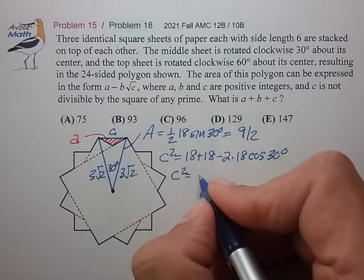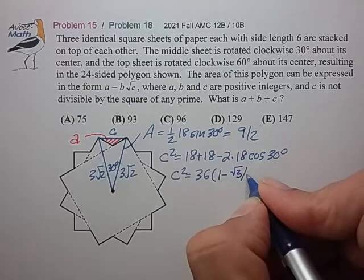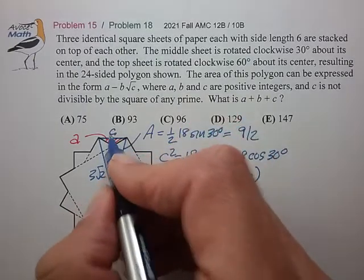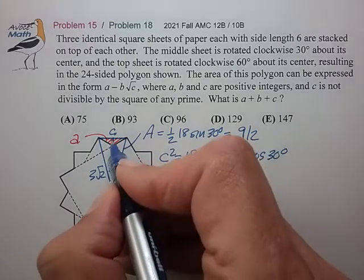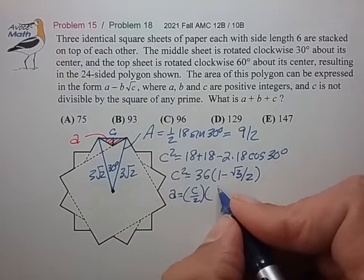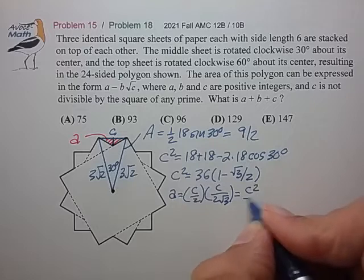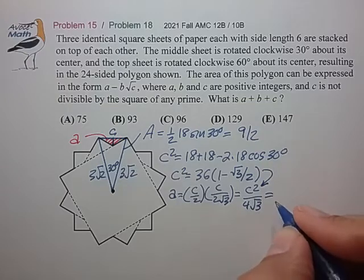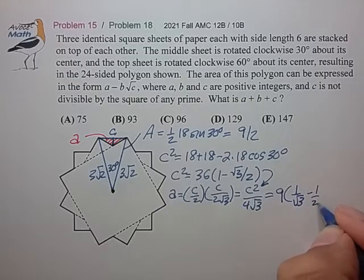This works out to c² = 36(1 - √3/2). The area is 1/2 times c times this height, which using a 30-60-90 right triangle is c/(2√3). So that's c²/(4√3). Substituting c² gives us 9(1/√3 - 1/2).